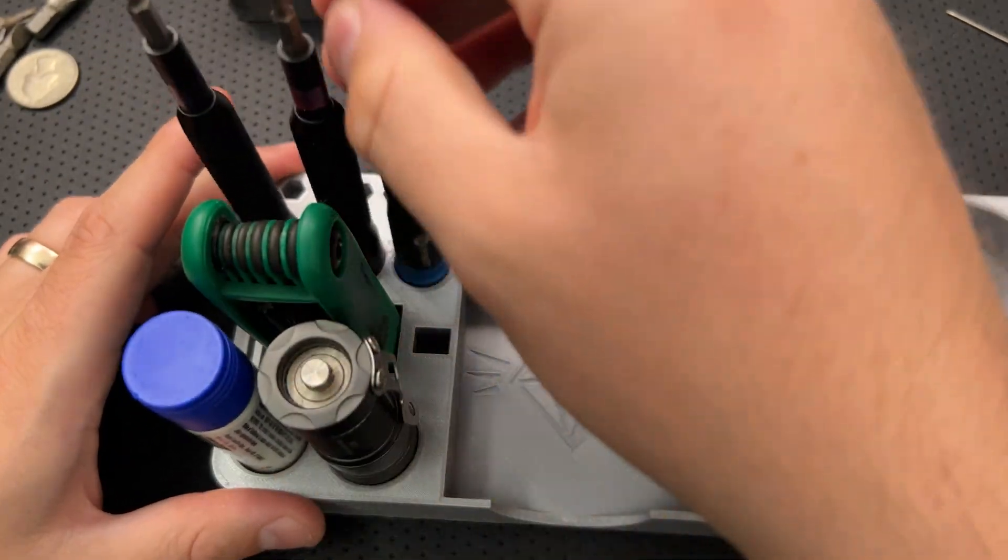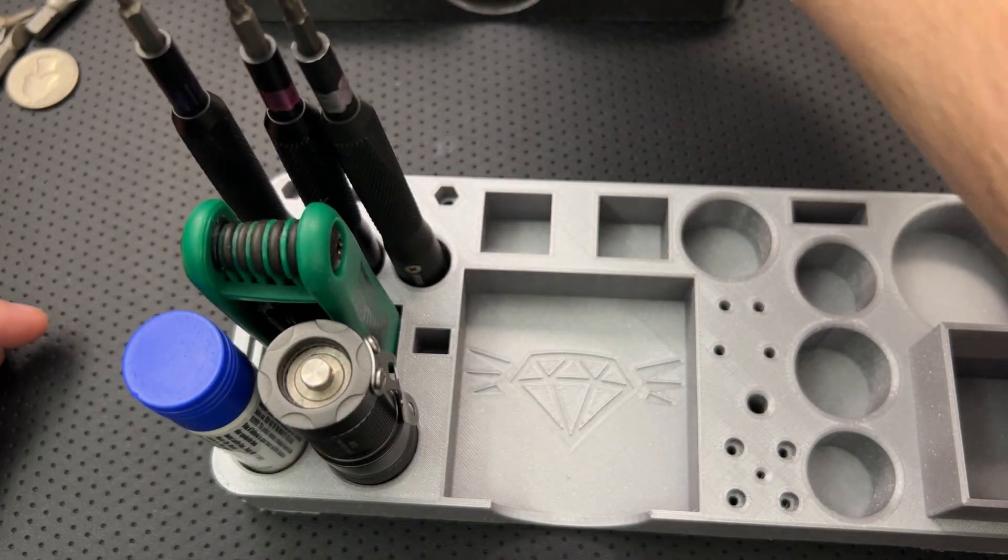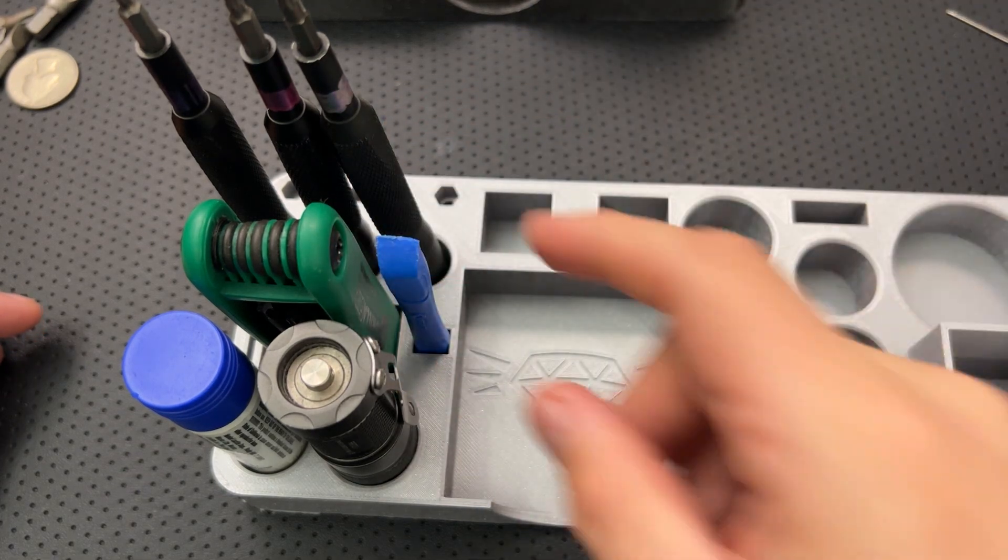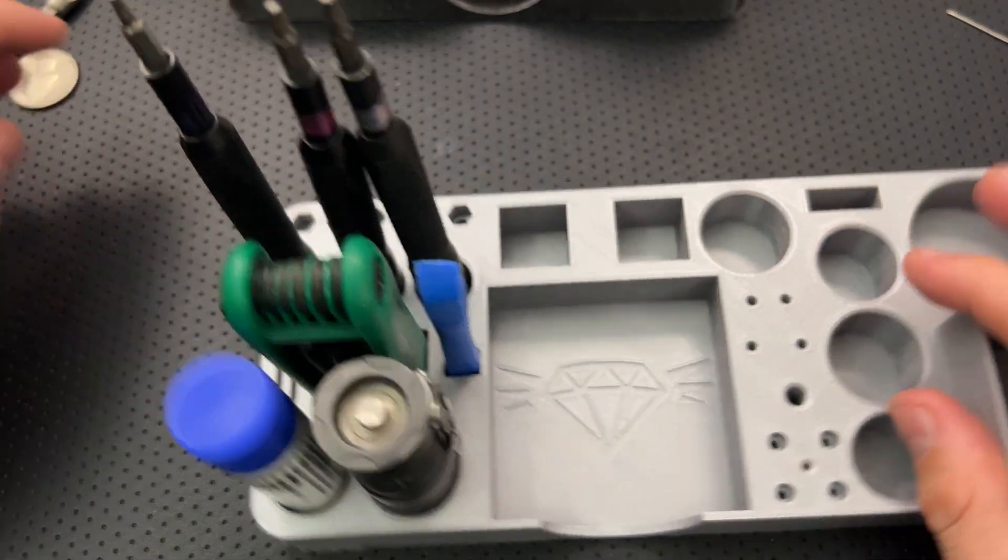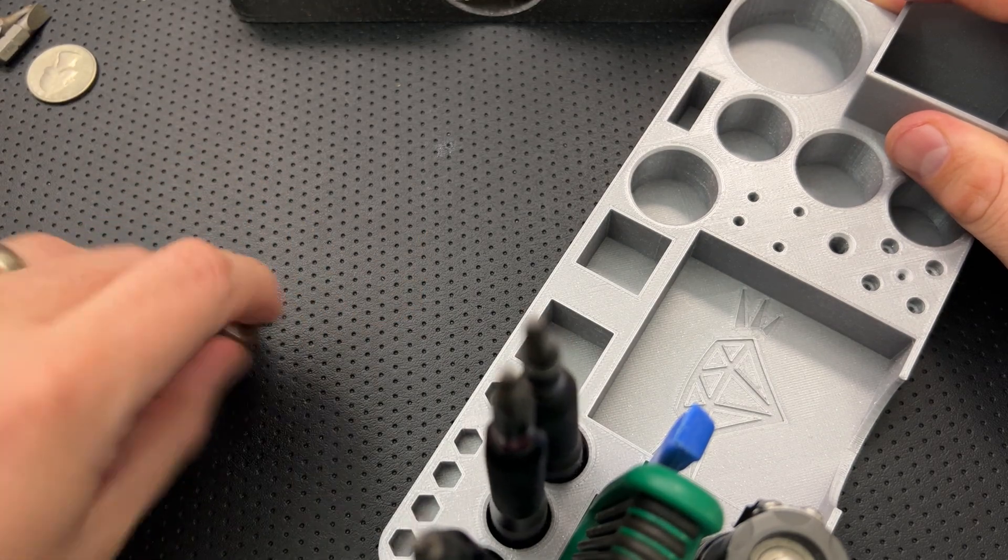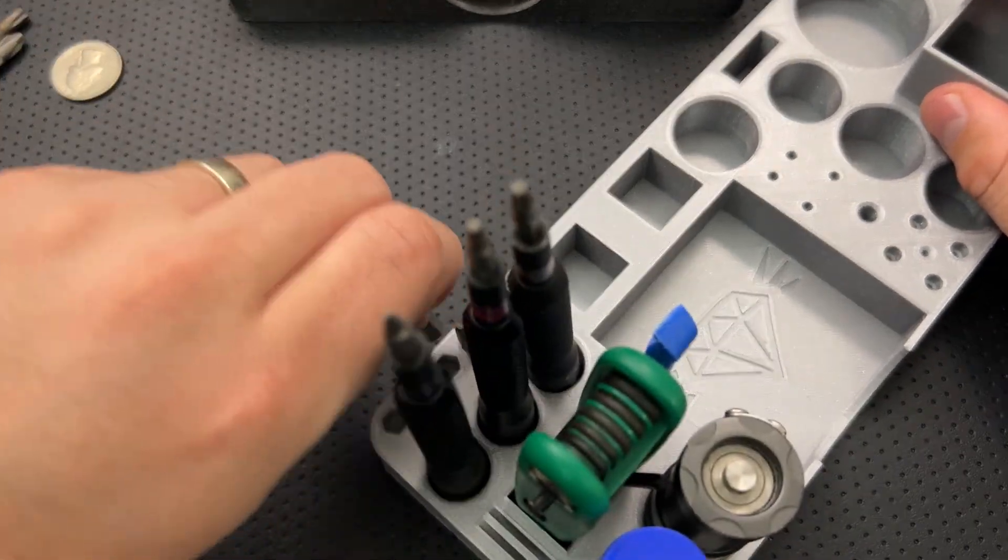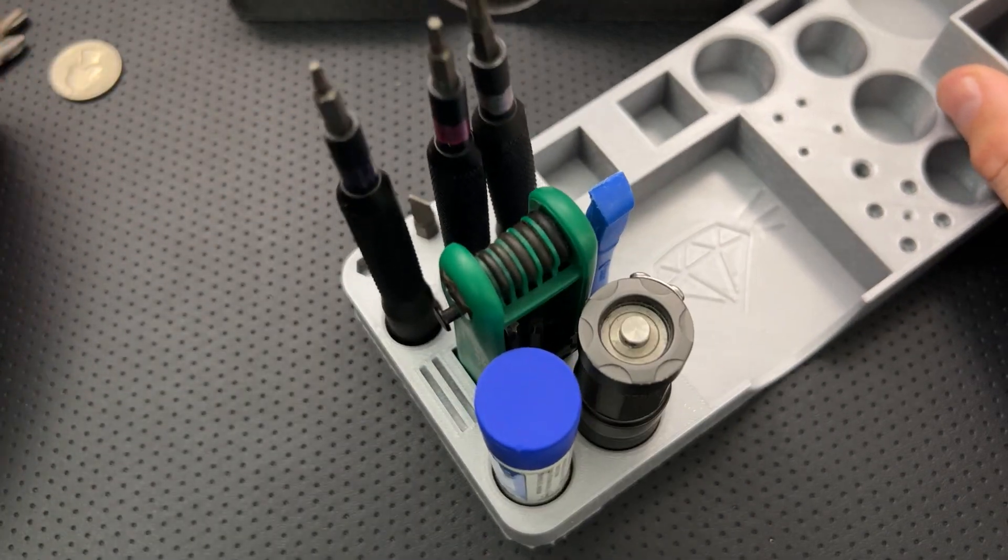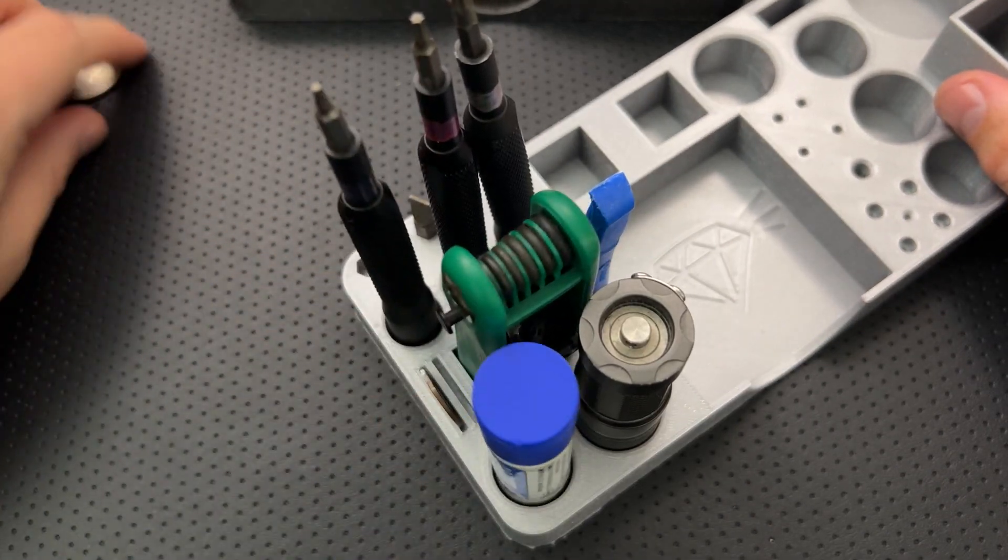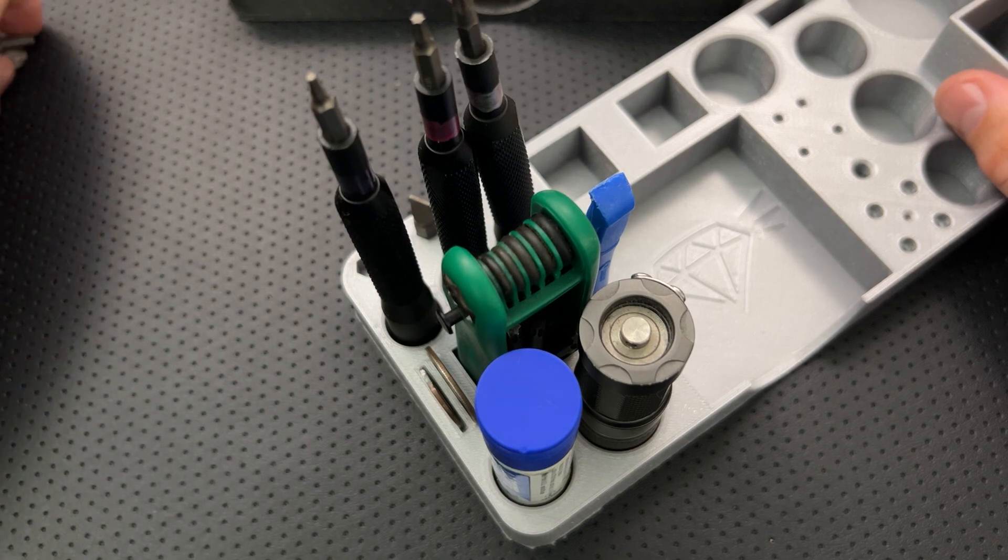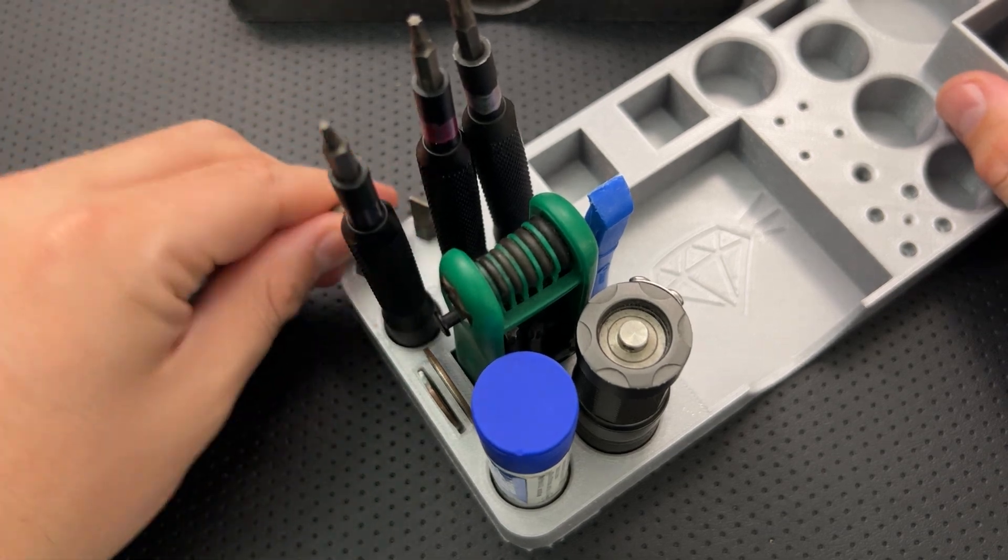So these are very easy to access. These are very easy to reach over and access. This guy is now very easily grabbable right over here. Then along the back here, still have room for bits. Still have room for a pair of coins right over here.